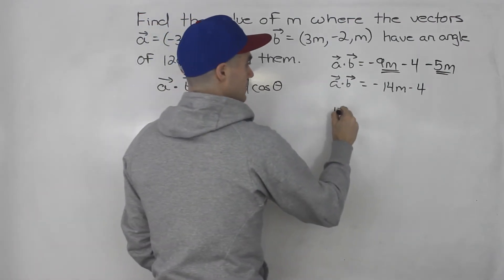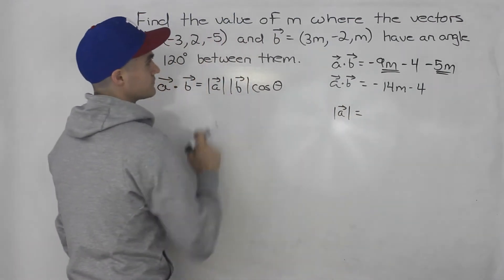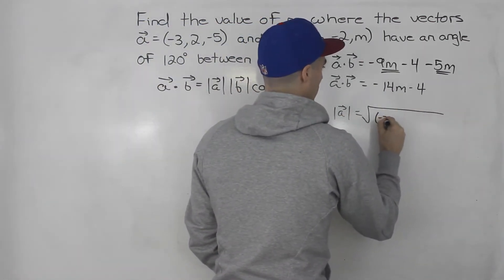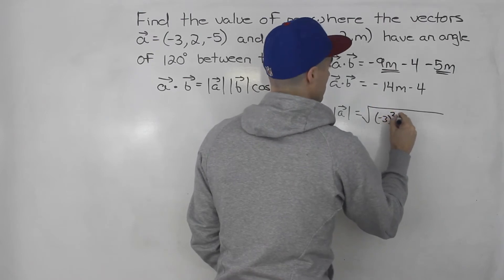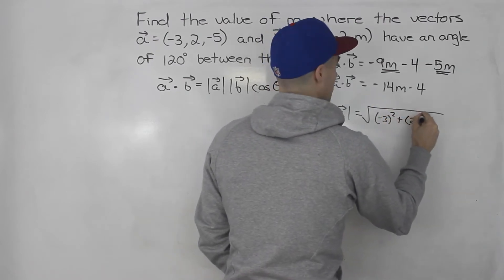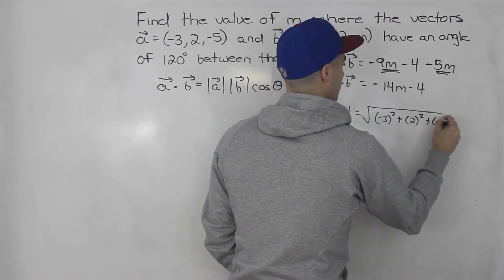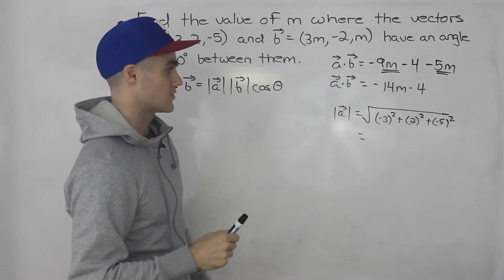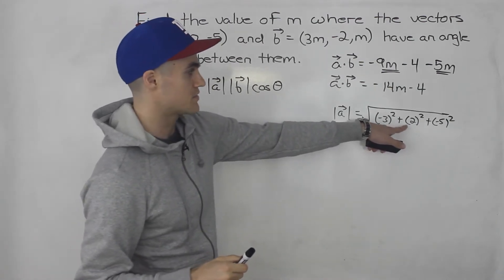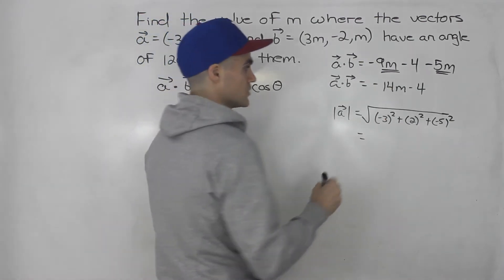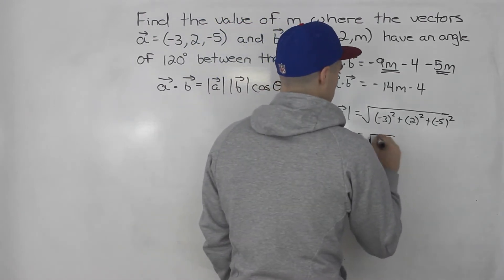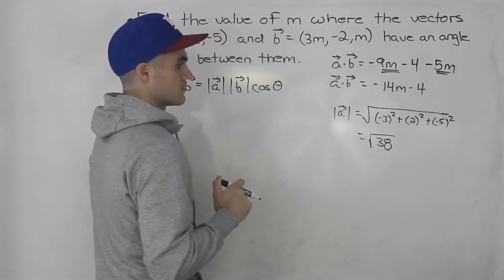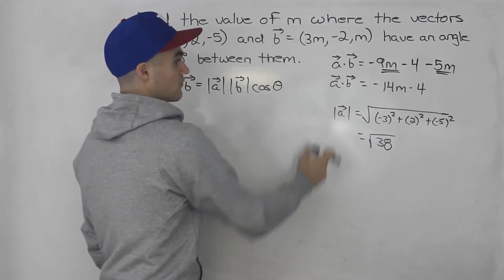What about the magnitude of a? We would just take the square root of all of the components squared and summed up. So 9 plus 4 is 13, plus 25, which is 38. So root 38 is the magnitude for vector a.